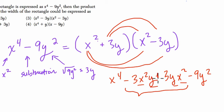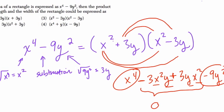the result is the same. One of these is positive, the other is negative. They're opposites and add to 0. All that's left is x to the 4th minus 9y squared, which is the correct initial expression.